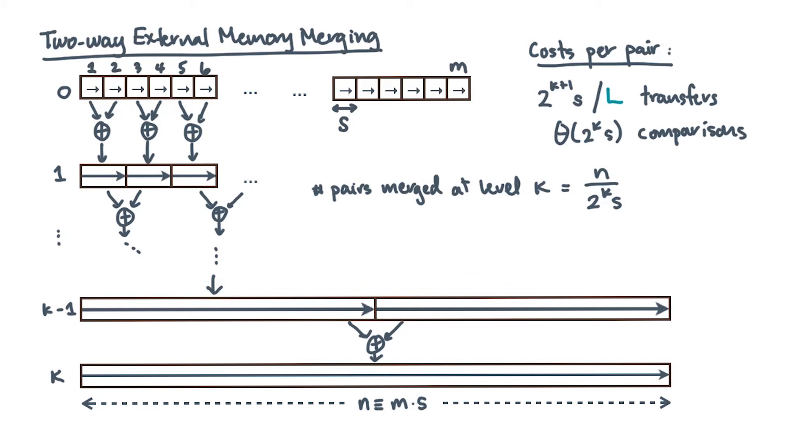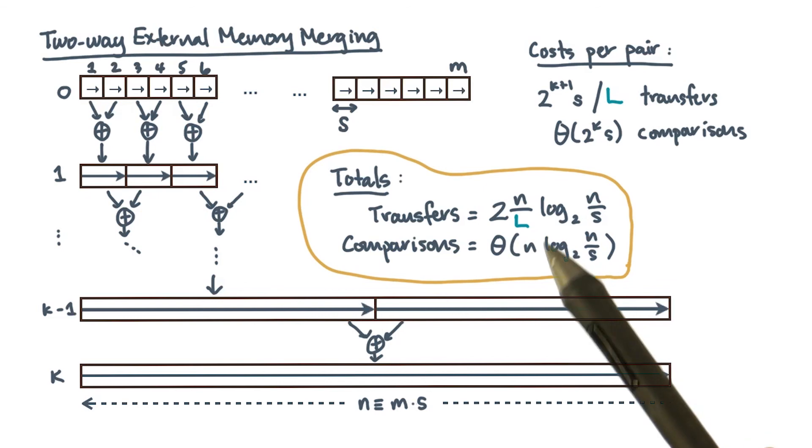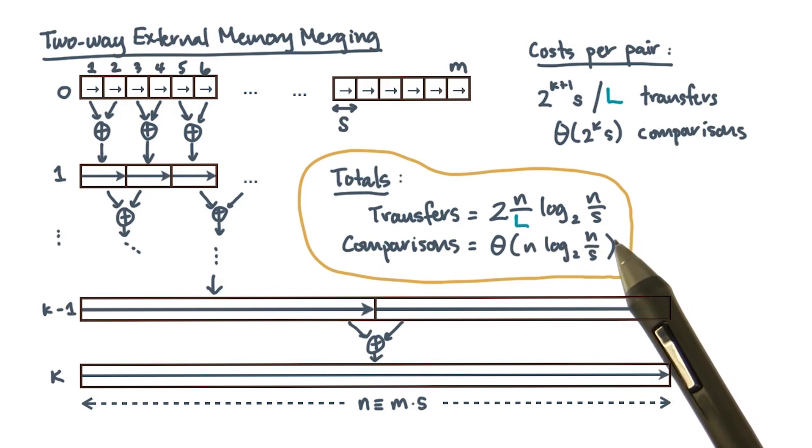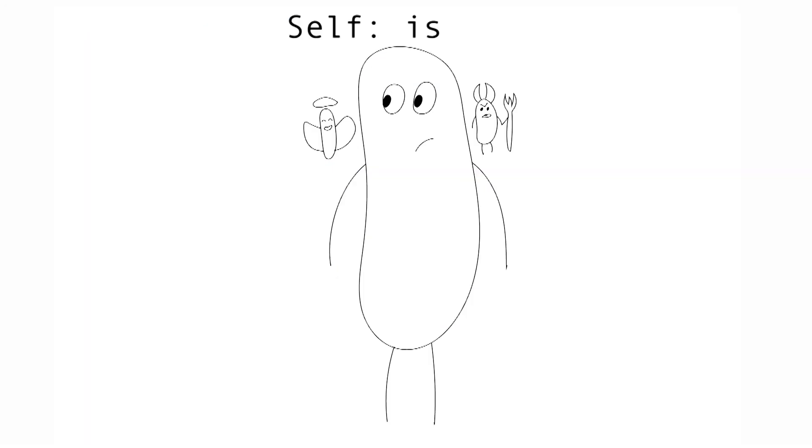What about the total number of levels? That's just log₂(n/s). Combining these costs over all levels, here are the total costs. The number of transfers is 2n/L × log(n/s). The comparisons are n × log(n/s). A good question to ask yourself now is: is this good or bad?